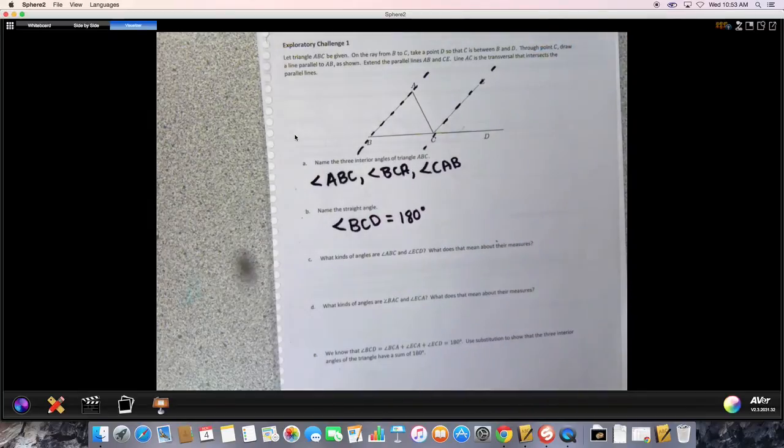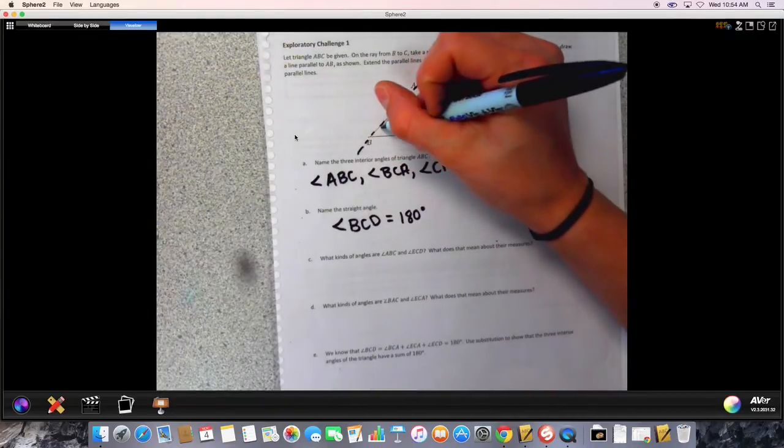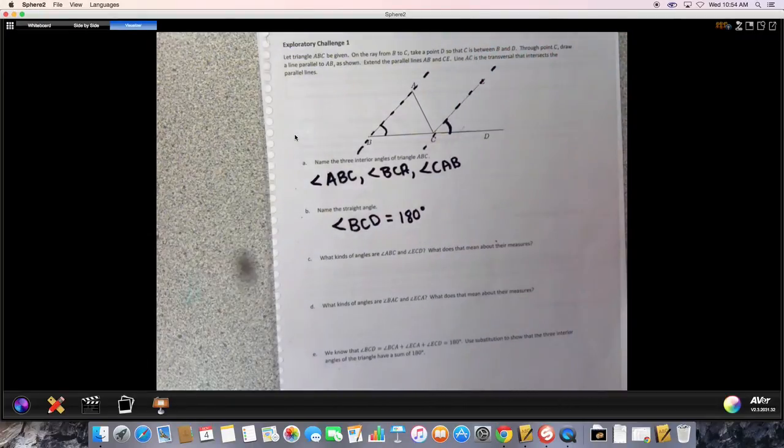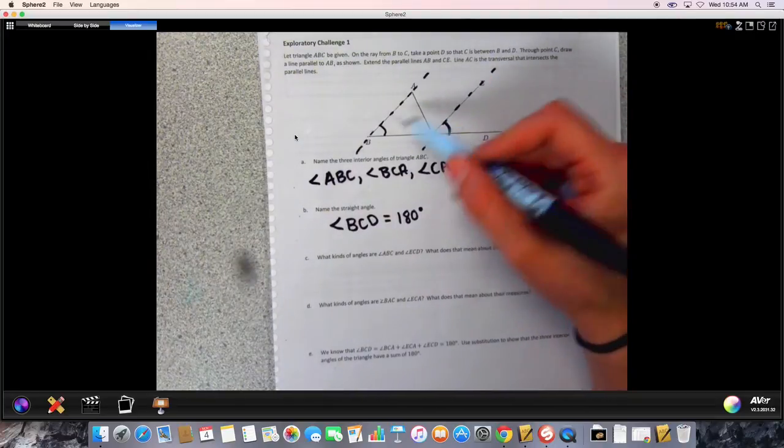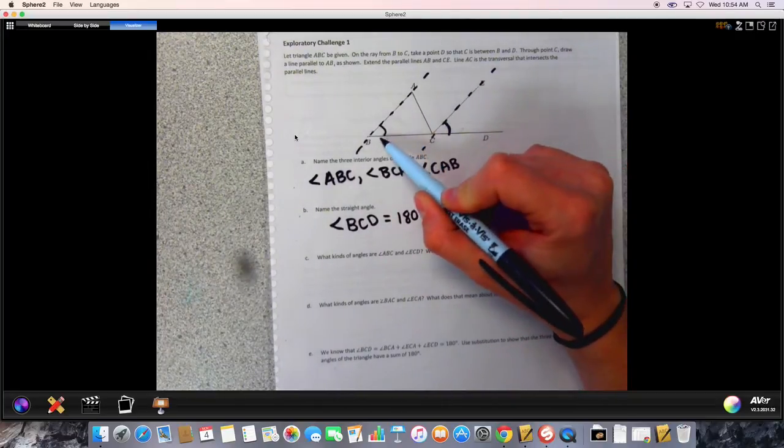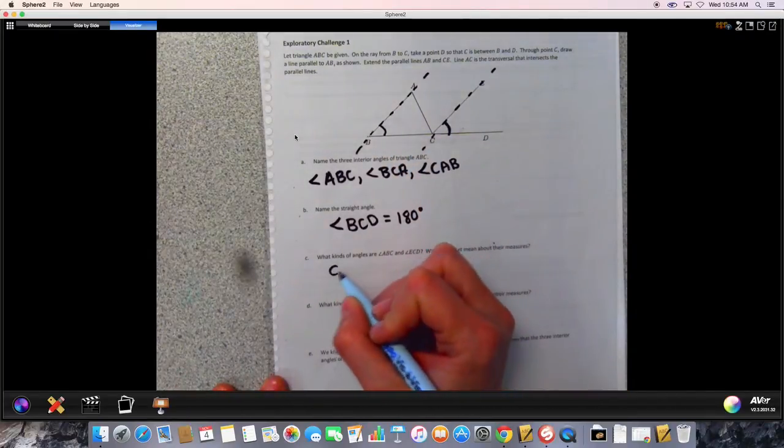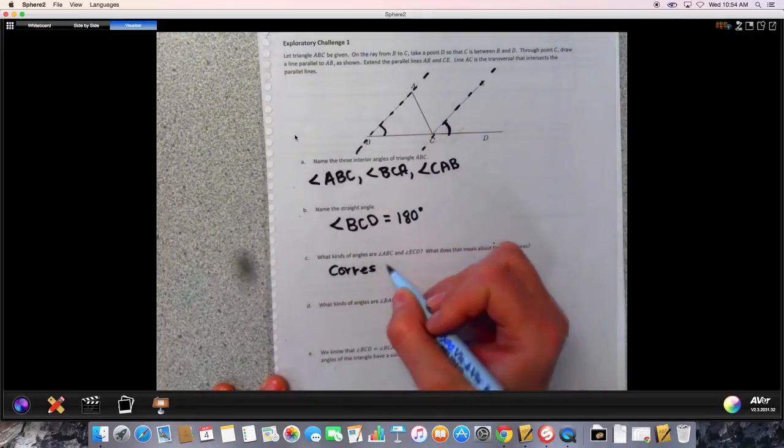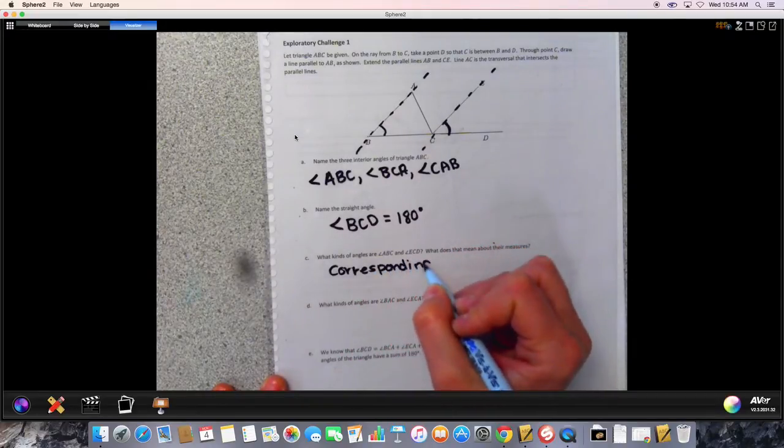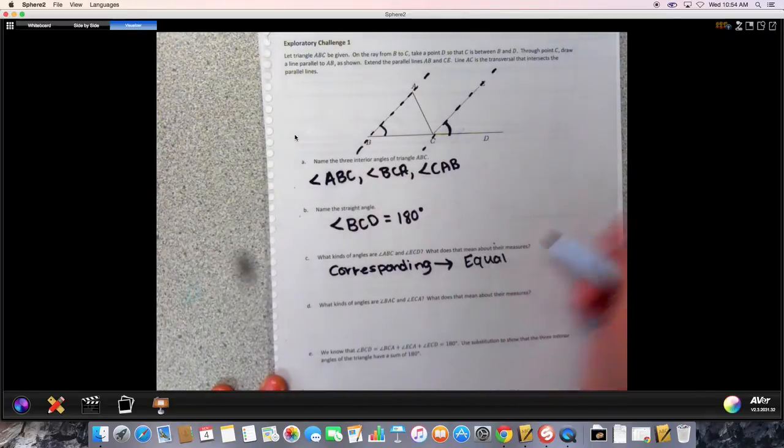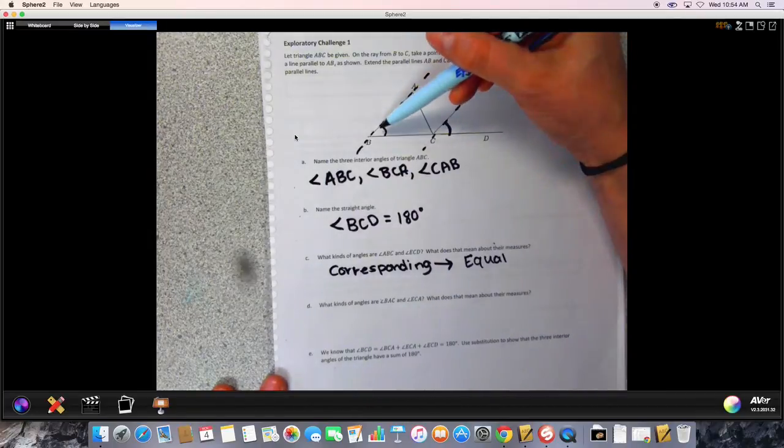That's going to be important in our next part because it says what kinds of angles are ABC and ECD. So ABC is right here and ECD is right here. We can assume then that these two are equal because they are corresponding angles, and corresponding means they're in the same location and that they are equal.